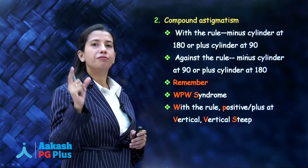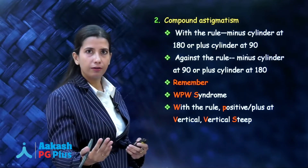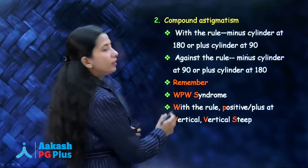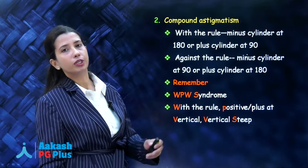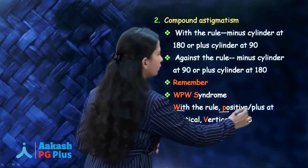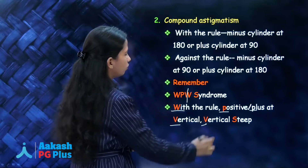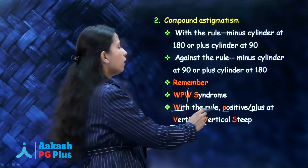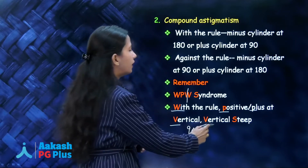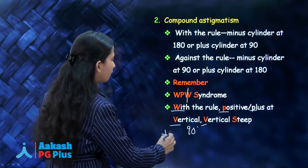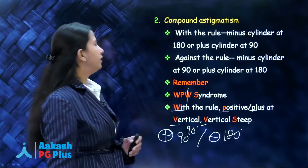With the rule means the vertical meridian is steeper — more curved, refracting greater. To remember it, use the mnemonic WPW syndrome from cardiology, modified for ophthalmology: W for with the rule, P for positive or plus, and divide W into two Vs — first V for vertical, second also for vertical. So in with the rule astigmatism, you have a plus cylinder at the vertical meridian, that is 90 degrees. So plus at 90 or minus at 180 is with the rule astigmatism.